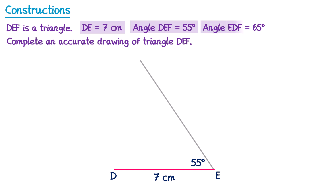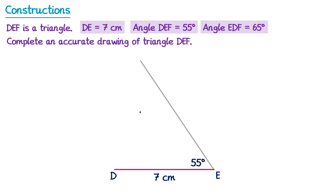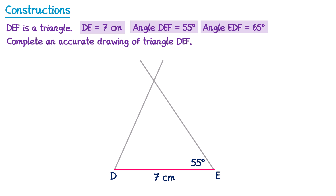Let's have a look at angle EDF, which will be the angle at D. So this time we take our protractor and place it at point D. The zero this time is on the inside scale, which means we need to go around the inside scale until we hit 65 degrees — which will be about here. So we mark on this point and draw a straight line from D through this point, giving us a 65 degree angle. So where these two lines intersect is the only place where point F could be. We can mark on this point as F, and here is our completed triangle.